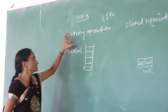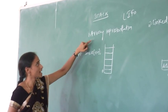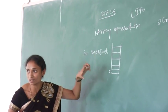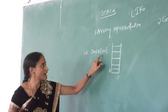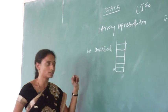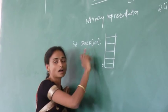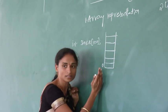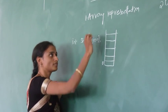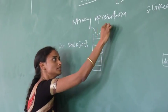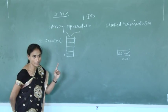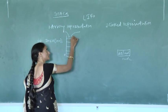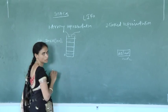Coming to the array representation: suppose the stack is represented as int stack of 100. We are allocating the maximum number of elements as 100, meaning our stack capacity is 100. After 100 elements — that is, 101 or 102 elements — cannot be placed. For inserting and deleting elements, we are using only one common end, and that end is called the top end.